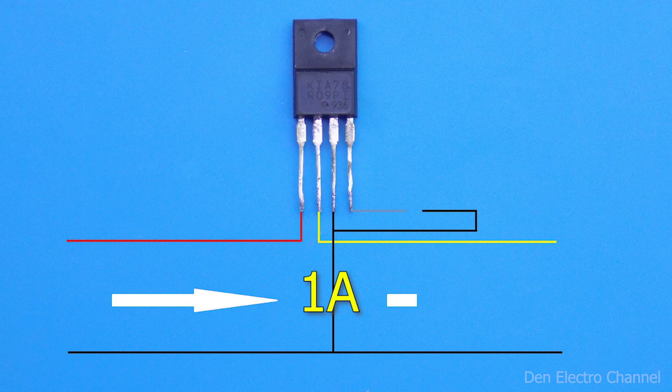Imagine that the current consumed by the load is 1 ampere and this current will be the same for the input and output. The output voltage is 9 volts, and the input voltage is, for example, 20. It turns out that the difference between the input and output voltage is 11 volts.